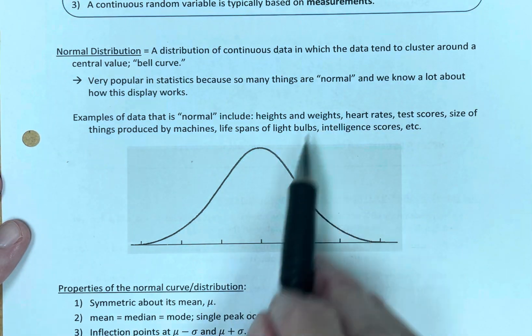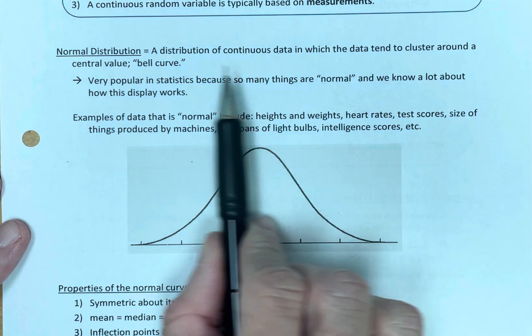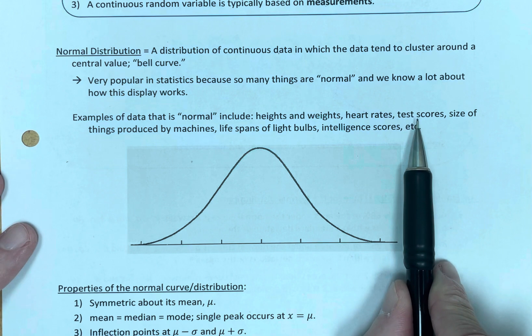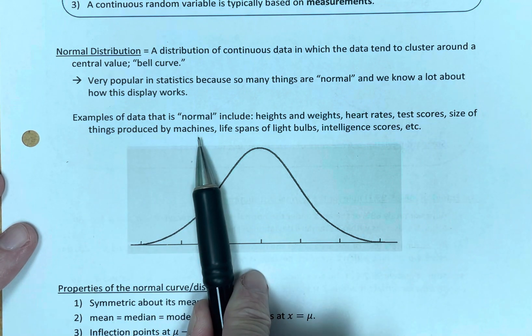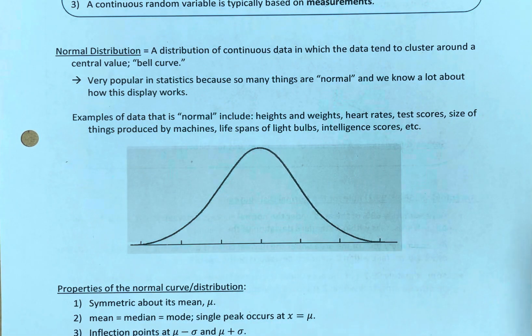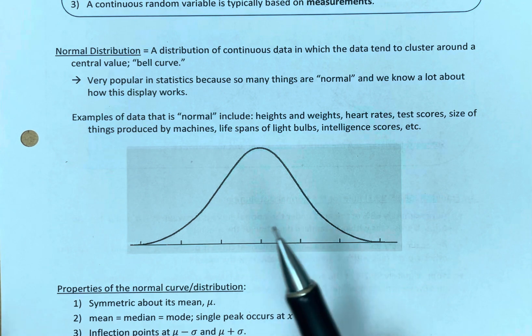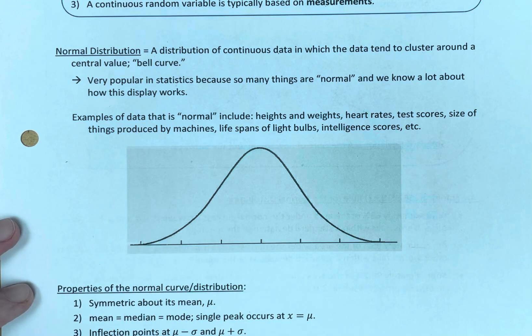Weight is the same. There's an average weight and a normal distribution. People above, people below. Heart rates are normal, test scores on the SAT, size of things produced by machines, lifespans of light bulbs, intelligence scores, et cetera. Lots of things are normal. Lots of that stuff, they all provide this bell-shaped normal distribution.